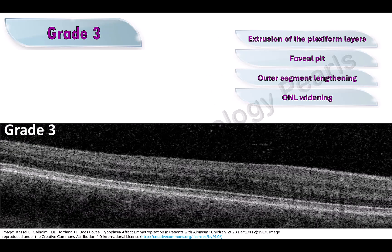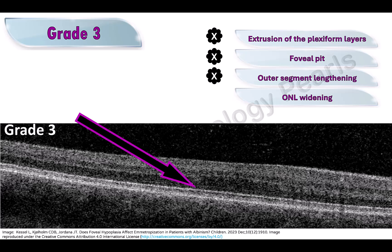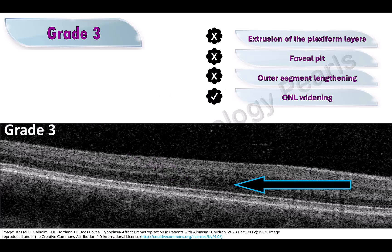In grade 3 foveal hypoplasia, extrusion of the plexiform layers and the foveal pit are absent. The outer segment lengthening is also absent — you can see that the elevation here has straightened out — but the outer nuclear layer widening is still present.